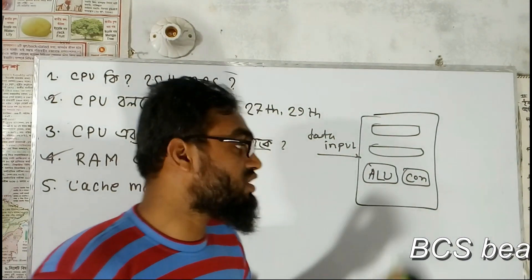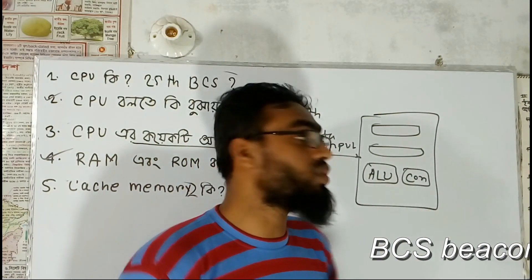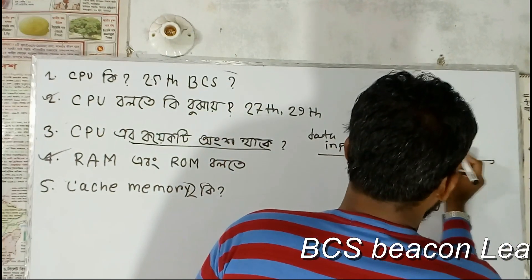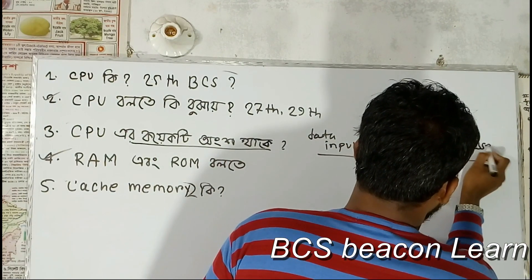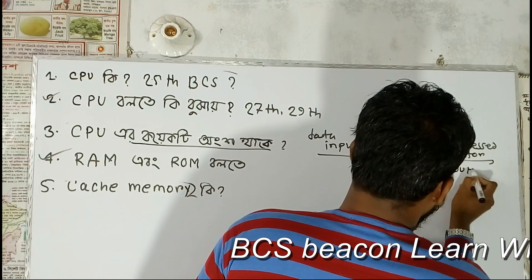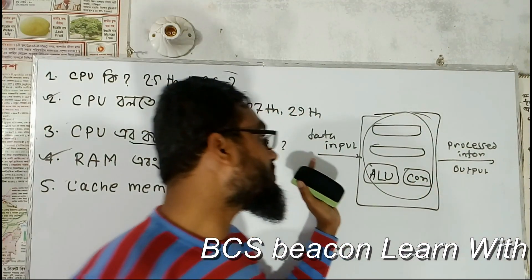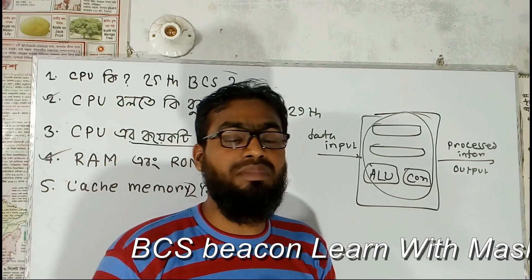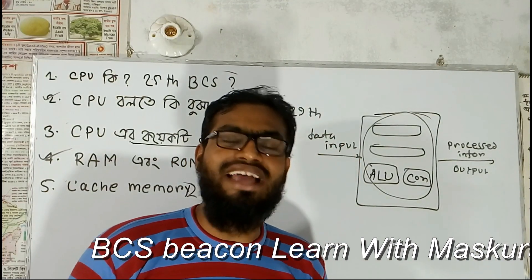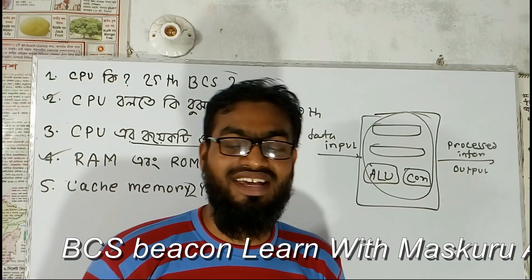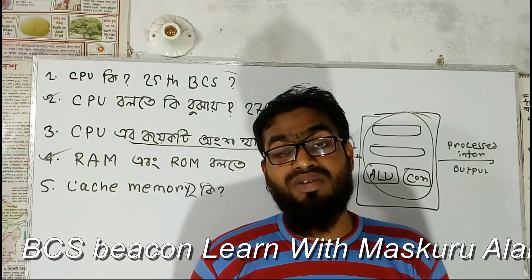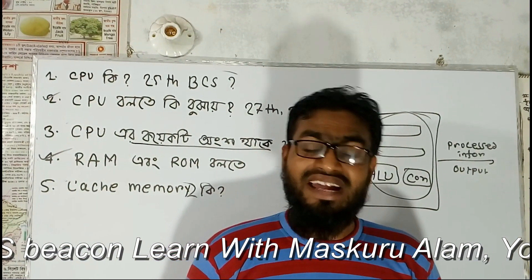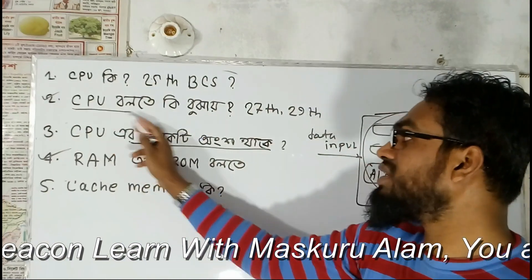Let's start with the process of the computer. When we give input, after giving input, it is actively processed — meaning the data goes through processing, and the processed information that we generally get is actually treated as output. Whenever this question comes in an exam, you should try to keep this figure in mind, and on the basis of this figure you will be able to give the answer appropriately.